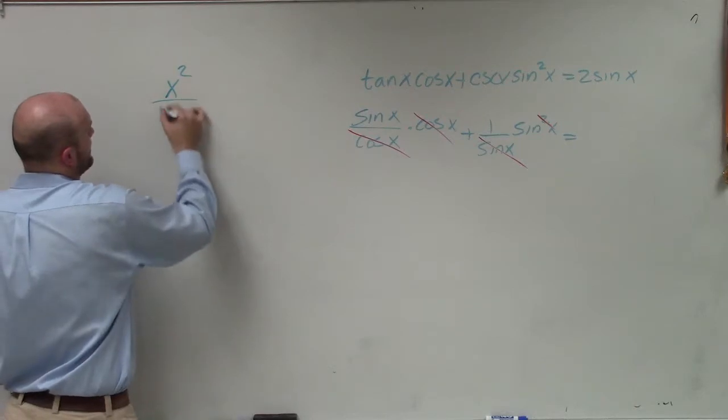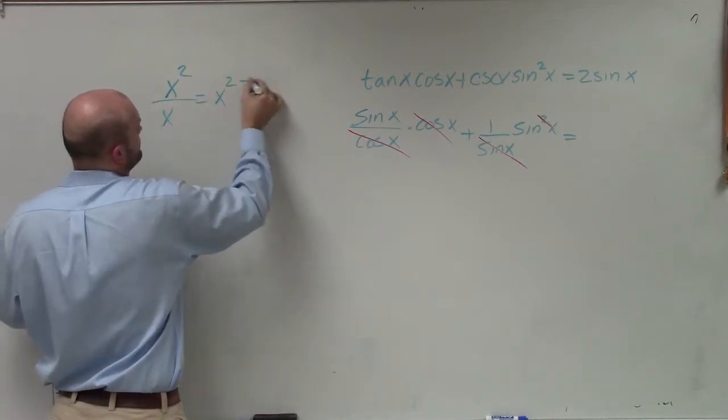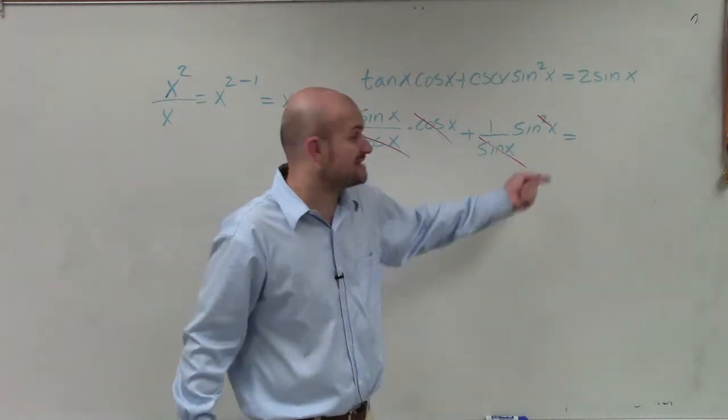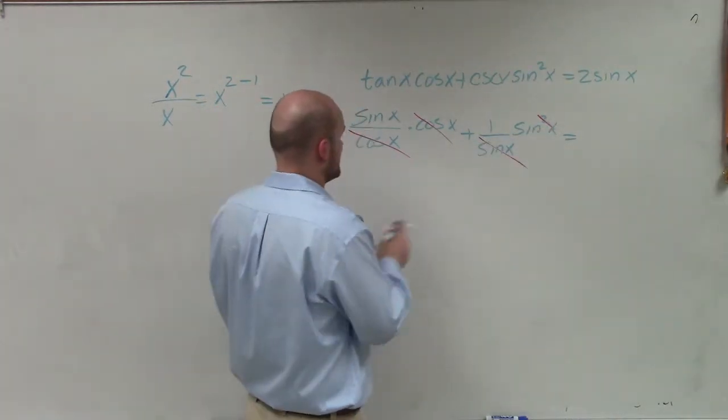Kind of think of it like this: x squared divided by x equals x to the 2 minus 1, which just equals x. Right? So it's not going to be both sines, but I'm still going to have a sine in my denominator or my numerator.